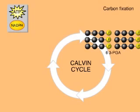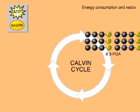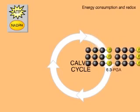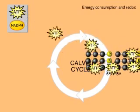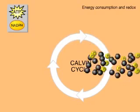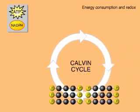Note that molecules are not actually rearranged in the manner shown here. In the next two reactions, products from the light reactions are used to boost the energy of these three-carbon molecules. First, high-energy phosphate groups are added. Six ATP molecules contribute phosphate groups so that each three-carbon molecule receives an additional phosphate group.